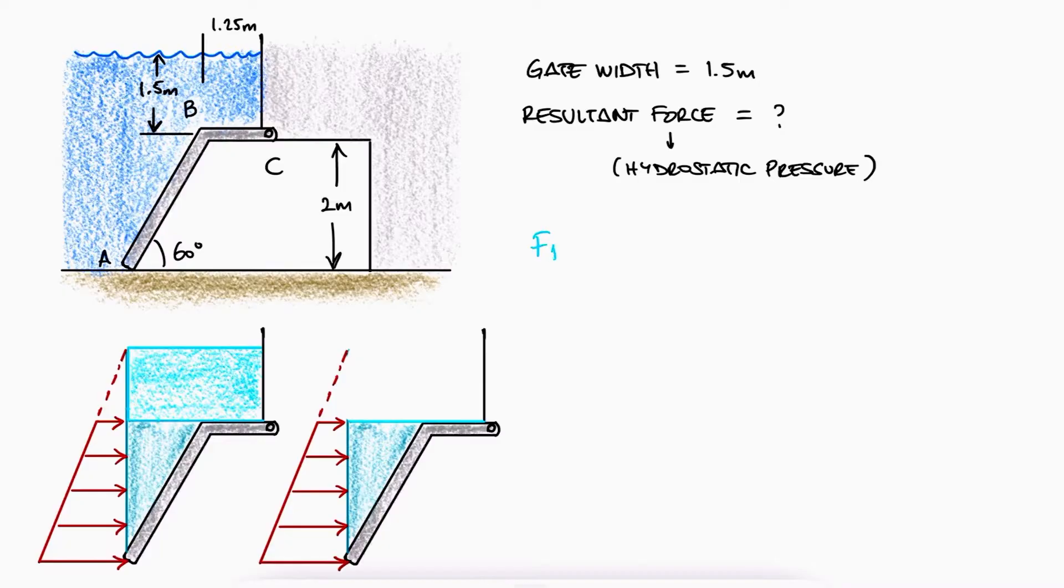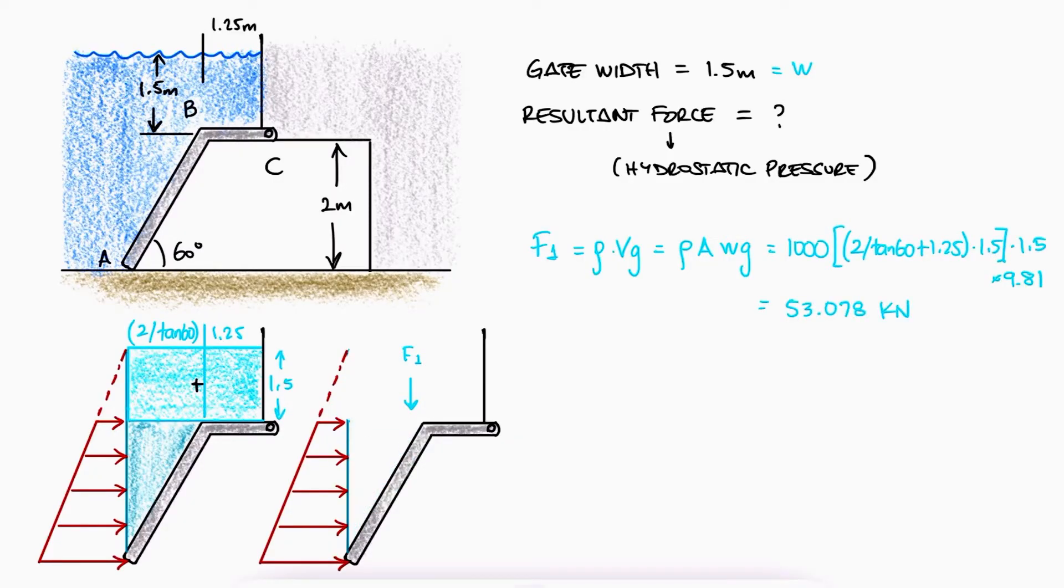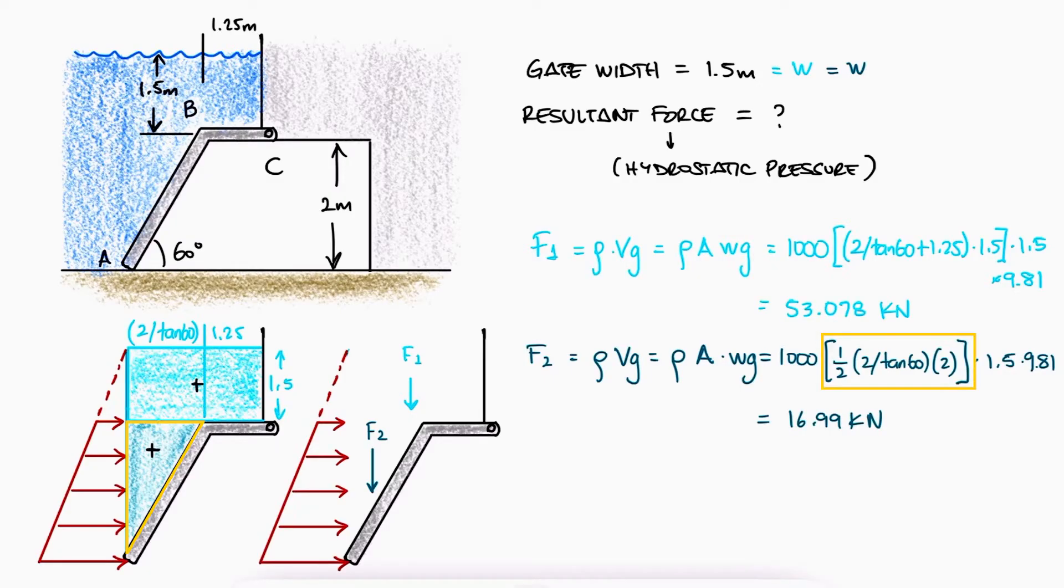The force of the weight of the water of the rectangular section will be equal to the density times gravity times that volume of water. The force of the weight of the water of the triangular shape would also be the density times gravity times that volume of water, which in this case can be found with the area of a triangle.